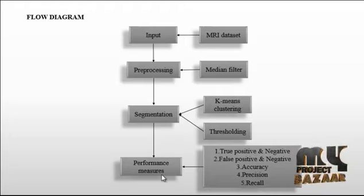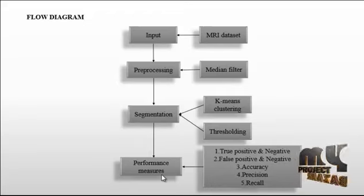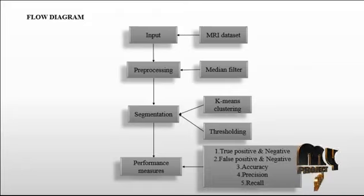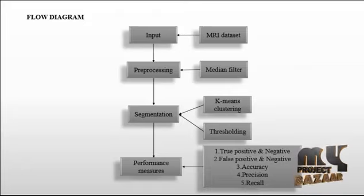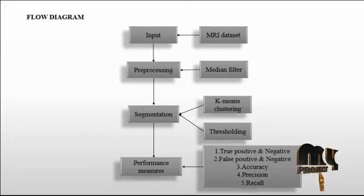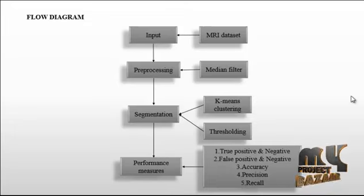Finally, we calculate the performance measure using formulas. The performance measure is calculated based on the segmentation results. The performance of the process is measured by evaluating the accuracy, which is determined by comparing results with the ground truth of the images. These are the overall components of the flow diagram.